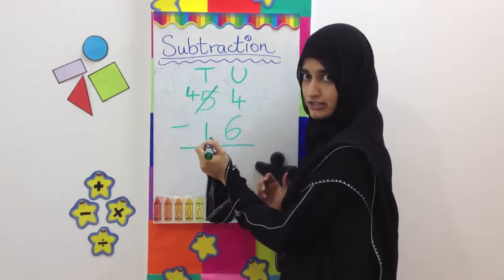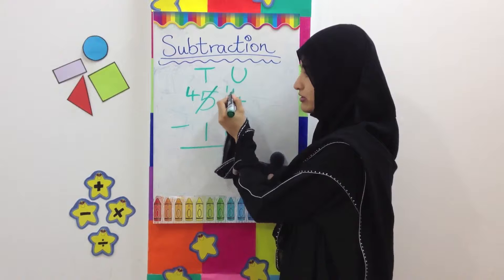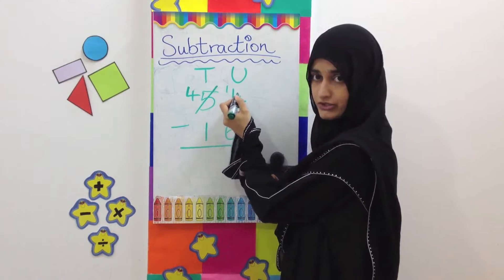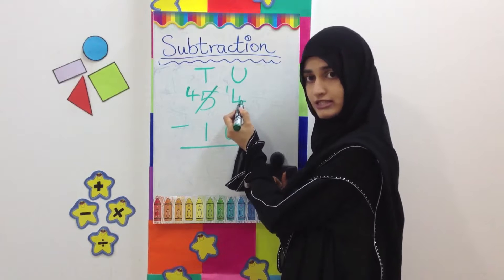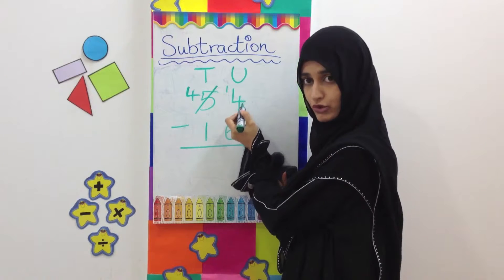We have 4 tens left here and 1 we are going to put next to the units over here. So now instead of 4, we have 14. We are adding a 10 more to the 4 we have.